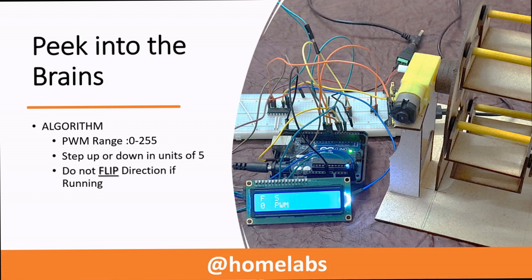The code here steps up the motor speed in units of 5 and there is an additional logic that the direction is not to be flipped if the motor happens to be running. This makes sure that the DC motor doesn't get damaged. As you can see, on the LCD screen, the status of the motor is displayed. F denotes the forward direction. S denotes that it has stopped. 0 denotes the PWM value that is being conveyed to the motor.